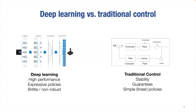These two domains — control and deep learning — classically have different perceived advantages and disadvantages. Control offers stability, guarantees, and typically relatively simple policies — at each timestep you have a simple policy. Whereas in deep learning, there are very expressive, high-performance policies, but they are brittle and non-robust. This talk is going to be about bridging these two worlds.